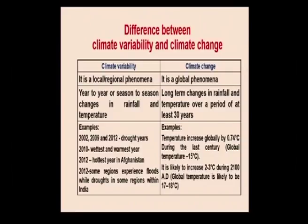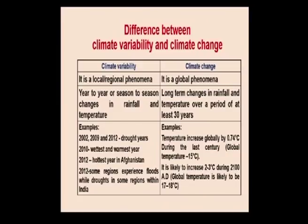What is the difference between climate variability and climate change? Climate variability is a local and regional phenomenon, whereas climate change is a global phenomenon. Year-to-year or season-to-season changes in rainfall and temperature represent climatic variability, while climate change involves long-term changes in rainfall and temperature over at least 30 years. Examples of climate variability: 2002, 2009, and 2012 were drought years in India; 2010 was the wettest and warmest year; 2012 was the hottest year in Afghanistan; and in 2012, some regions experienced floods while others experienced droughts within India.